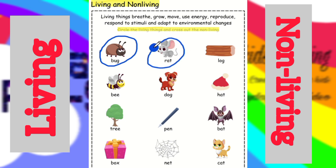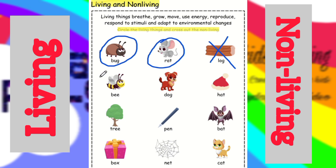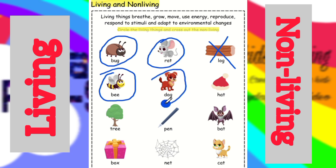Next is wood log — it cannot move or breathe, so it is a non-living thing. Next is bee — bee is also a living thing because it can breathe and move. Dog is also a living thing.